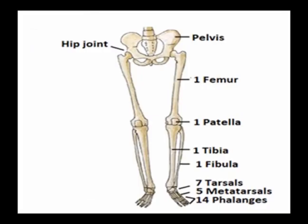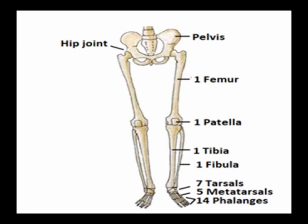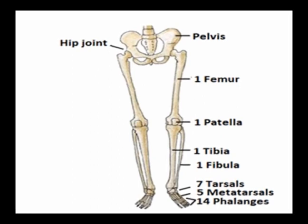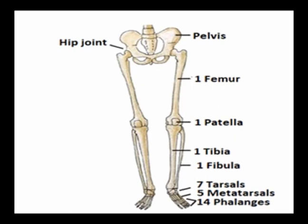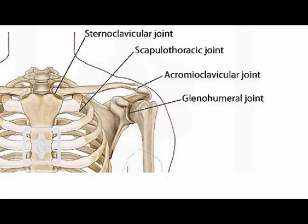The bones that make up the appendicular skeleton include the bones of the hands, feet, upper extremity, lower extremity, shoulder girdle, and pelvic bones. All the bones exist in pairs, one on each side of the body.